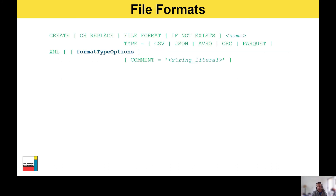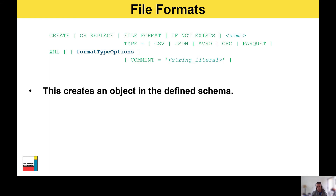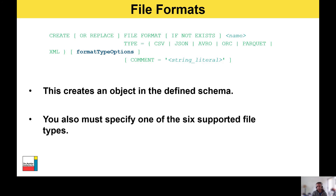This is the standard syntax for creating a file format. When you run this and replace the values with things specific to your environment, it creates an object within the defined schema. You must also define one of the six supported file types: CSV, JSON, Avro, ORC, Parquet or XML. It's worth noting that file formats can also be used for unloading data from Snowflake — data in Snowflake can be unloaded into JSON or CSV file formats.